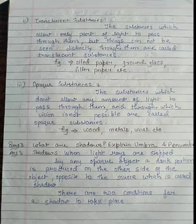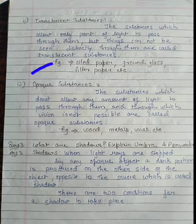Students, translucent substances are those which allow only part of light to pass through them, but things cannot be seen distinctly. We can see a blur image but we do not see clear objects.